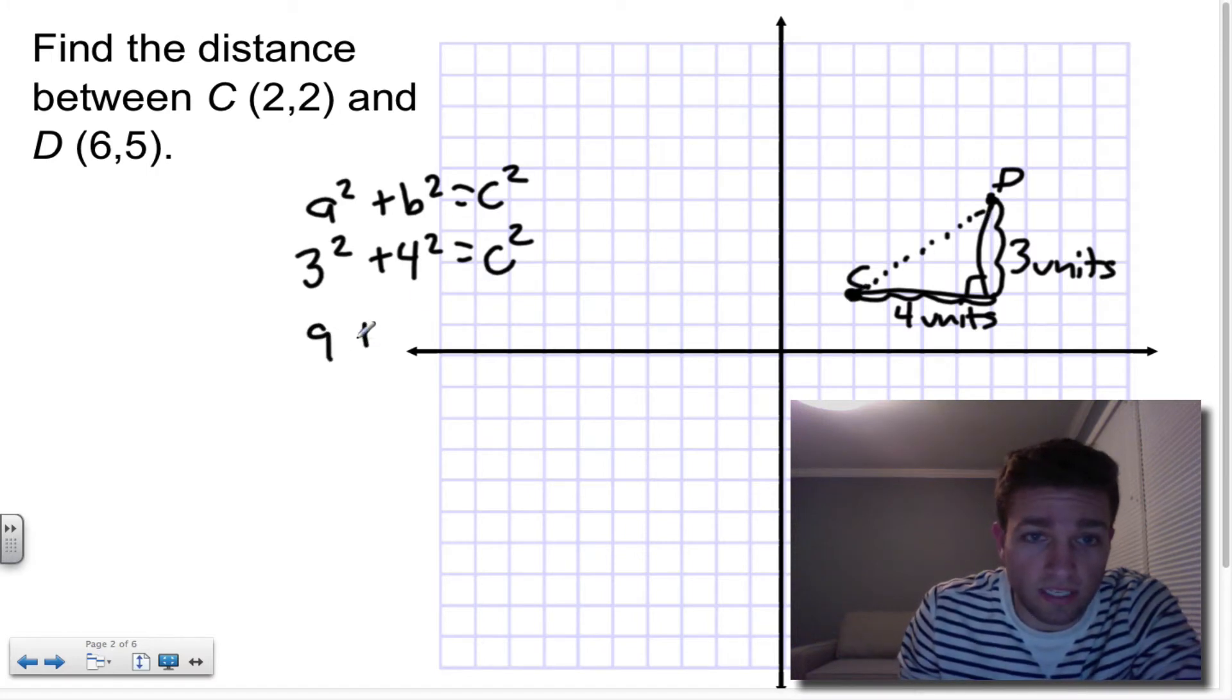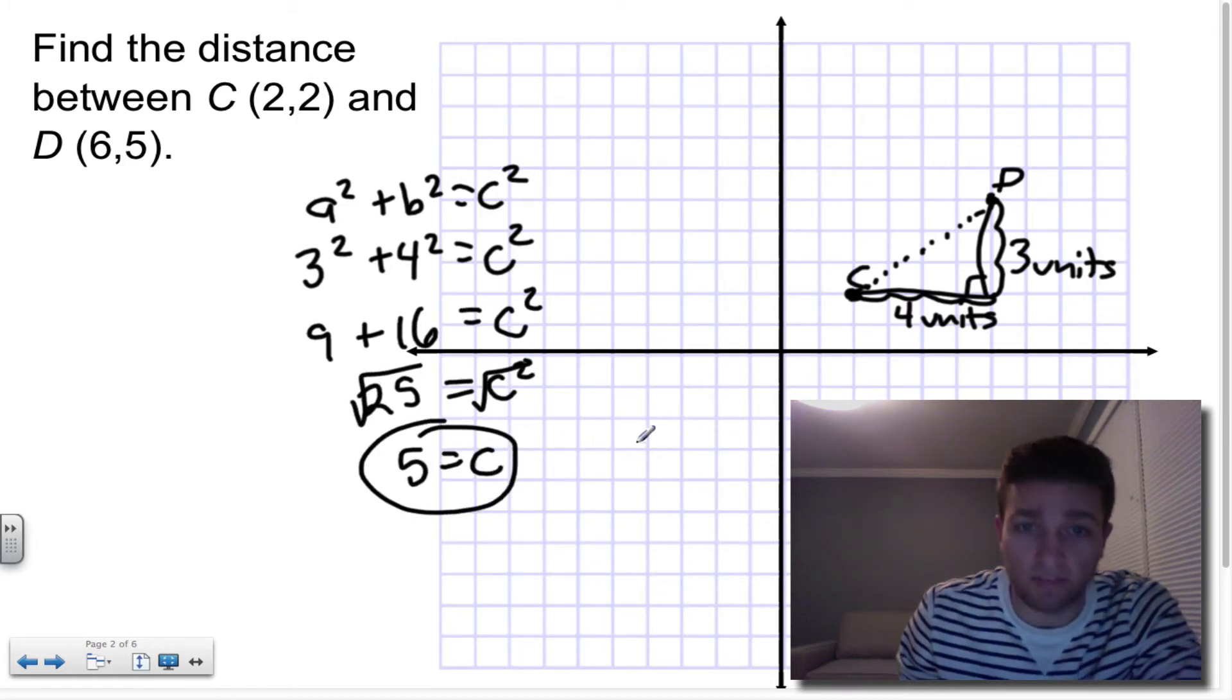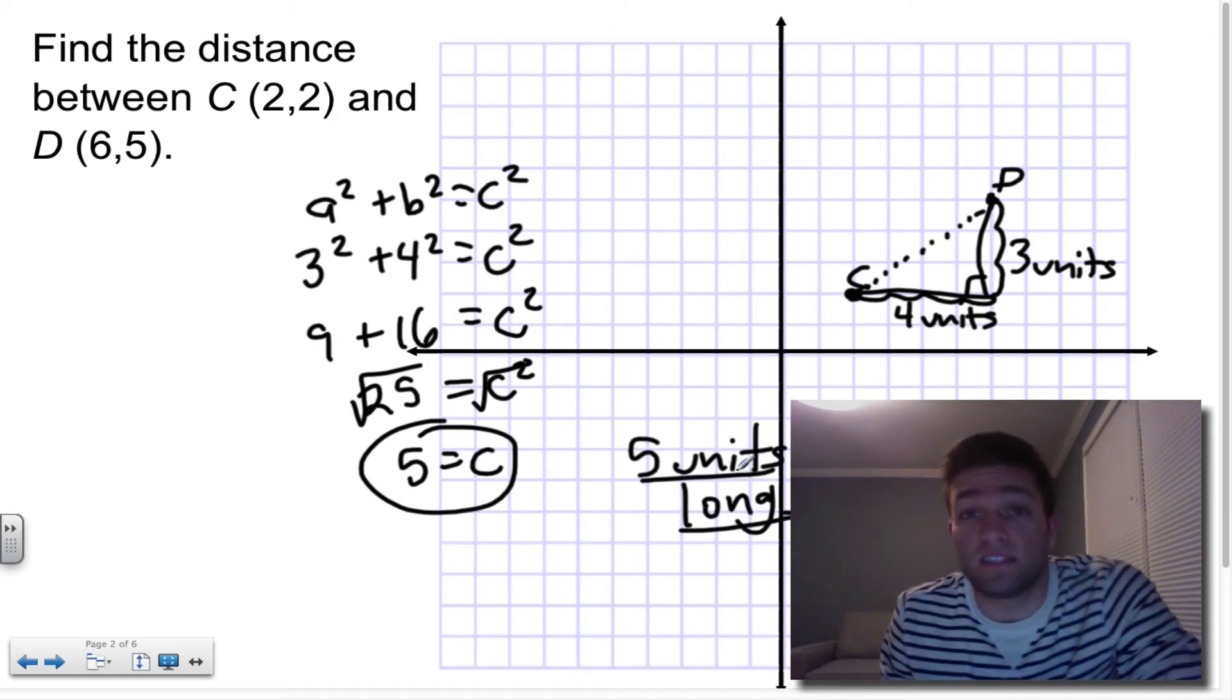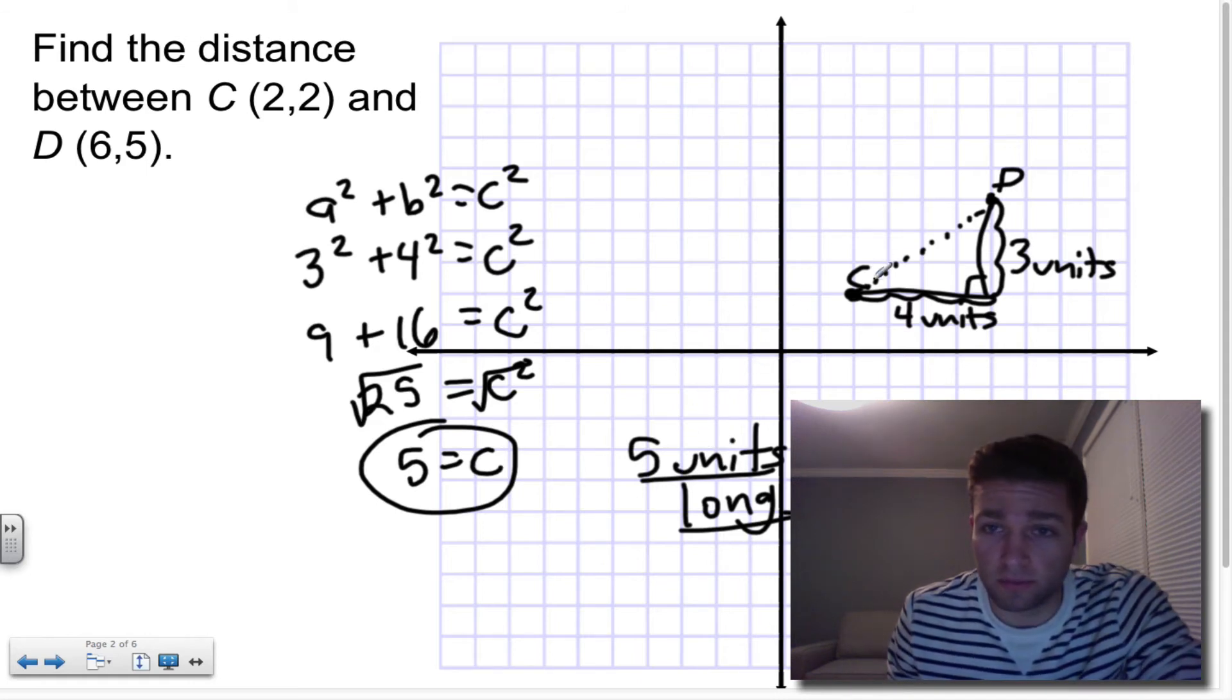What is the distance from C to D? Well, three squared is nine, four squared is 16, nine plus 16 is 25, and if I square root both sides, I find out that the hypotenuse would be five units long. And this is today's lesson.